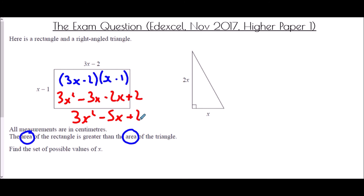The area of the triangle is one half times the base, which is x, times the height, which is 2x. Multiplying: x times 2x is 2x squared, and half of that is x squared. So the area of the triangle is x squared.